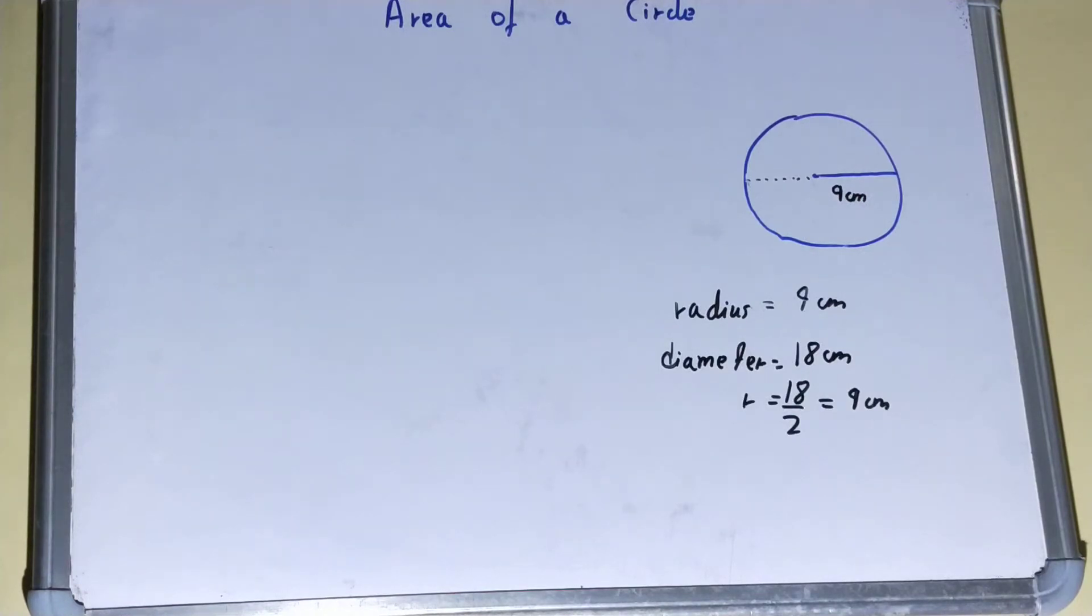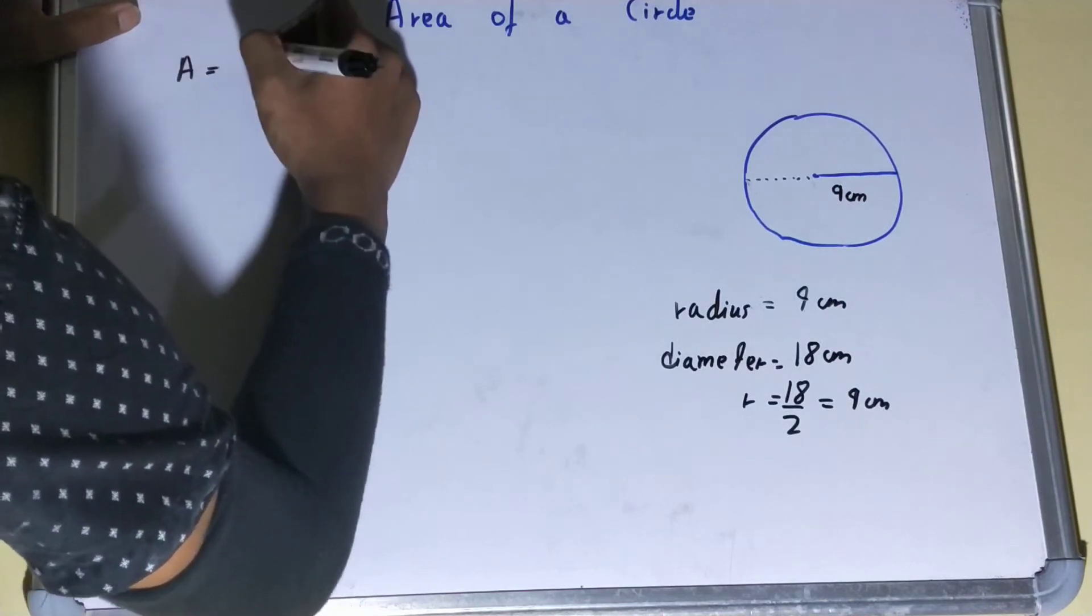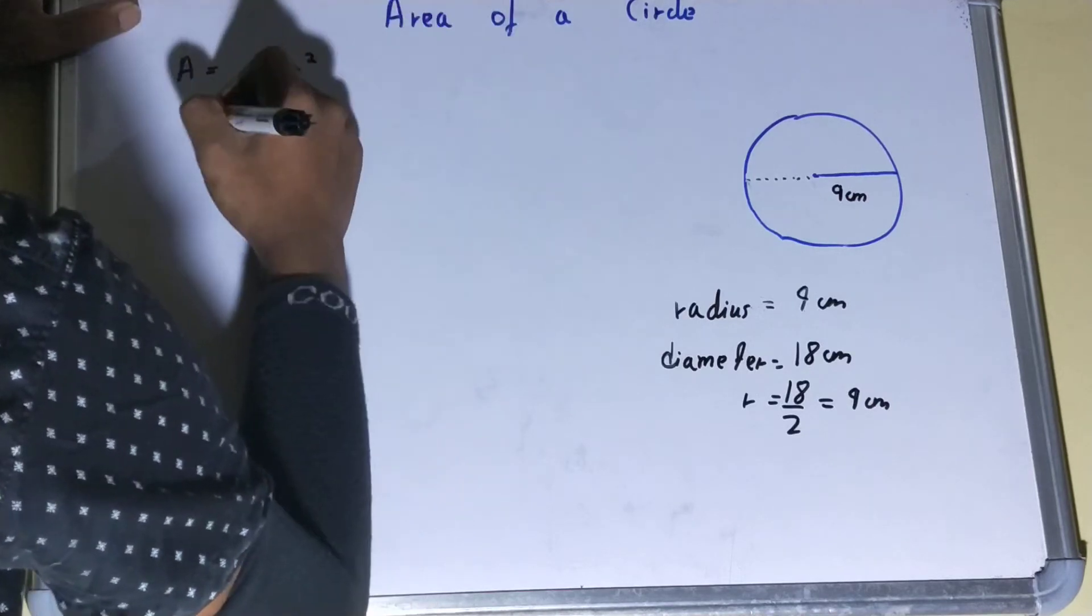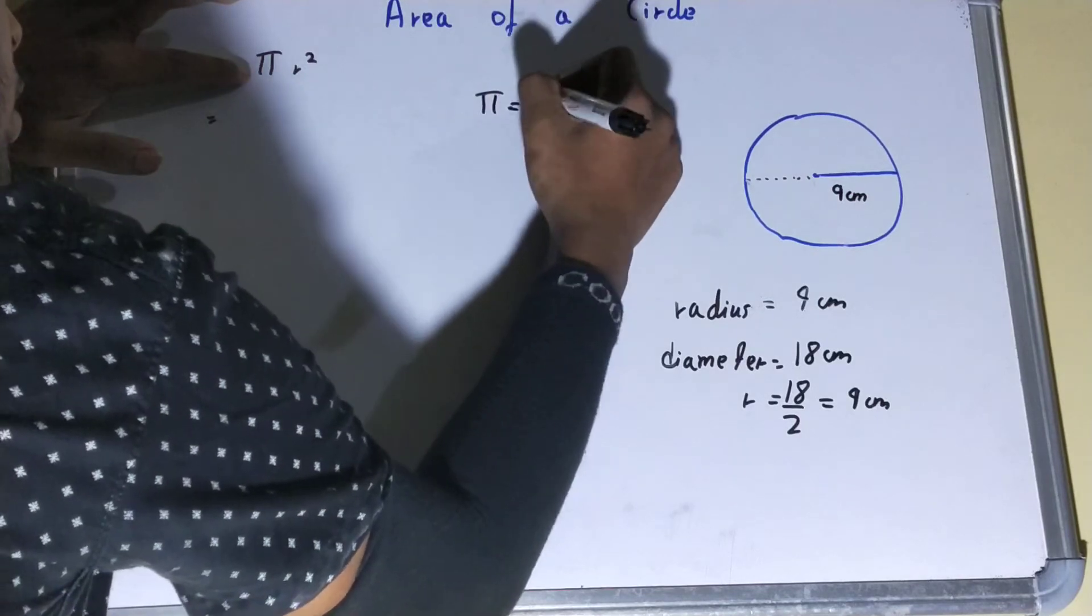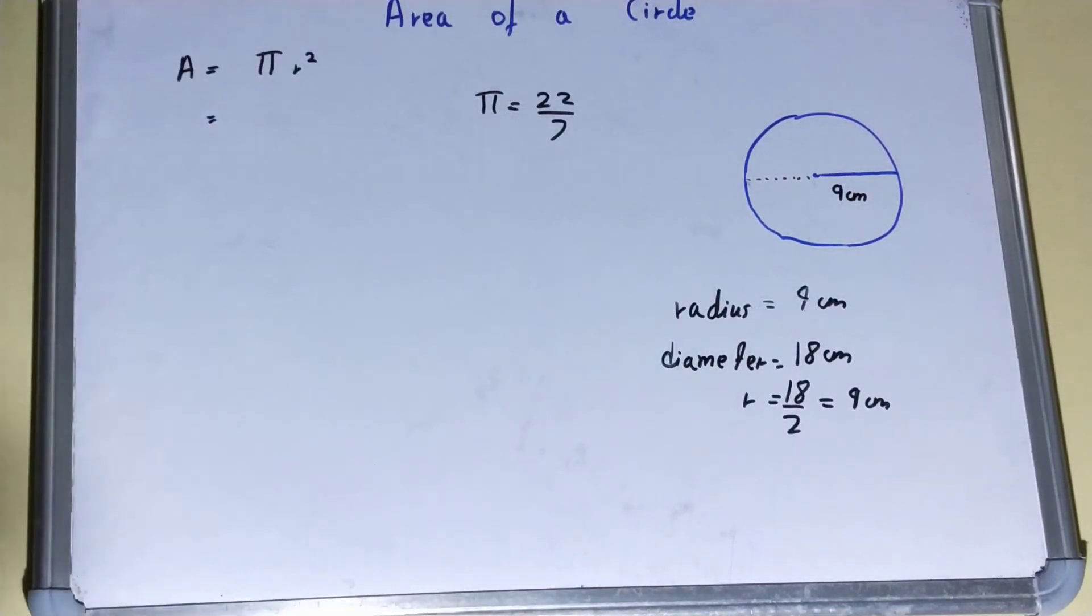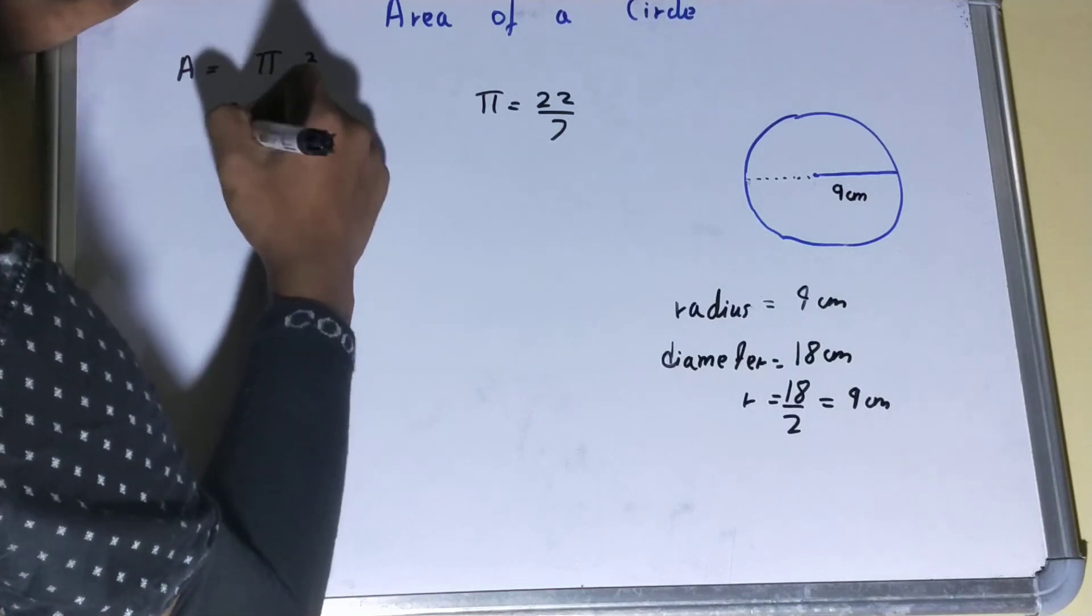For finding out the area of a circle, we need the formula. The formula is pi r square. Pi in this case is basically the constant, that is 22 by 7, and that stays constant for all the questions or calculations. It never changes.